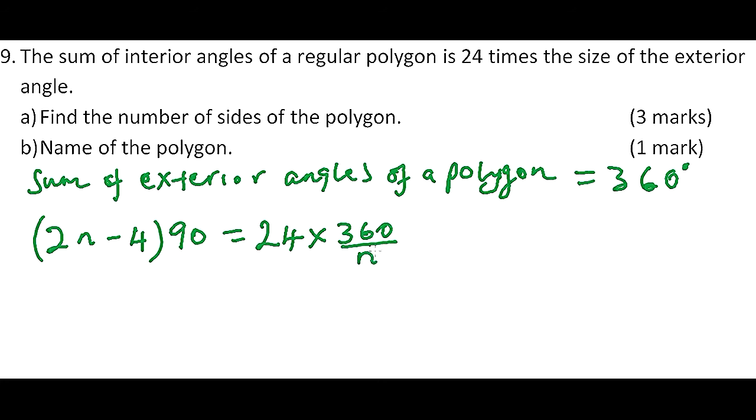So exterior angle, we divide 360 divided by the number of sides which is n, that will give us the exterior angle. This is the sum of interior angles of a regular polygon is 24 times the size of exterior angle. And we have said the sum of exterior angles is 360, so to get one exterior angle we divide by n.